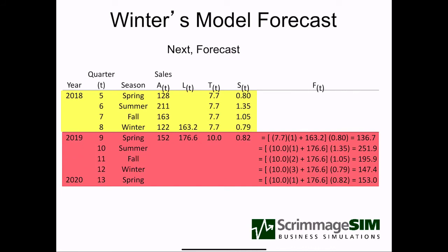With our newly updated values, we can forecast new values for summer, fall, and winter. These forecasts use the new trend and the new level, but the same seasonal factors we had before. It's only when we get to spring of 2020 that we have both a new level, trend, and the seasonal factor that was updated back in spring of 2019.